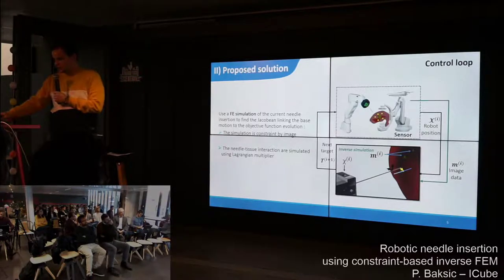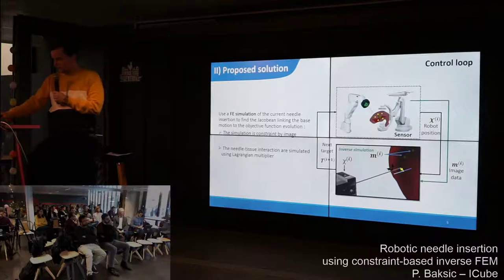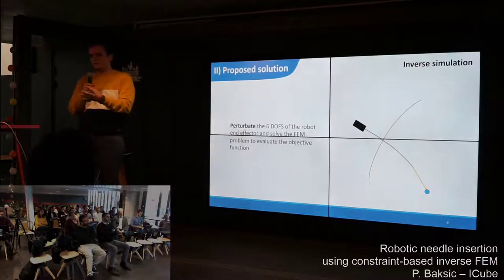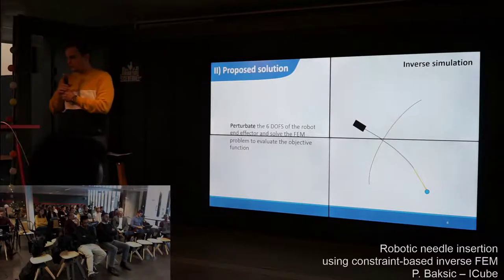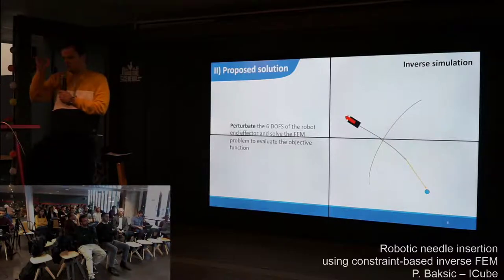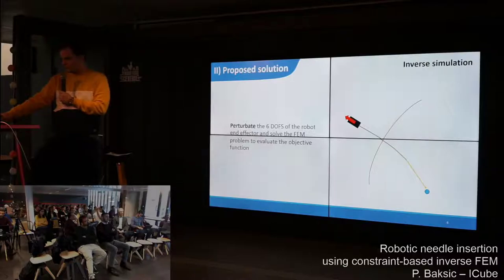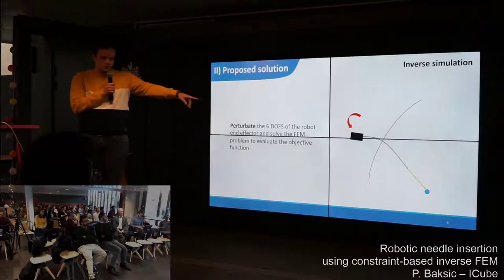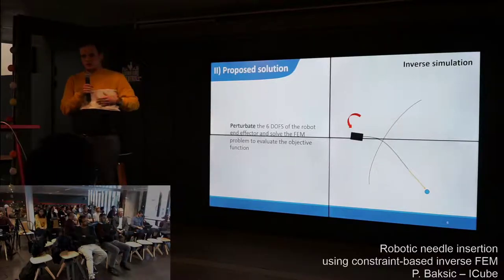How do we compute this Jacobian? What we do is perturbate all the DOFs of the needle base to see how the objective function evolves. As you can see here, we perturbate it in each direction, then we see the evolution of the objective function, and this way we can compute the Jacobian.